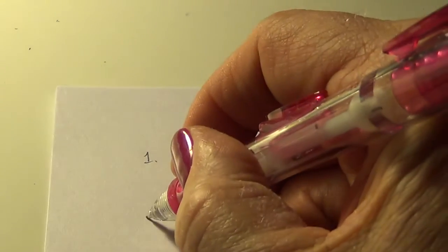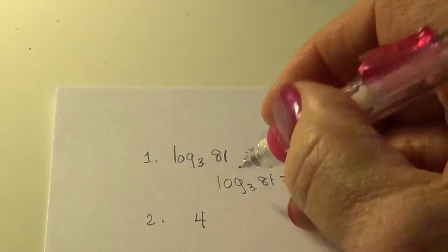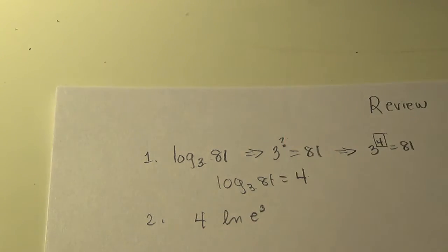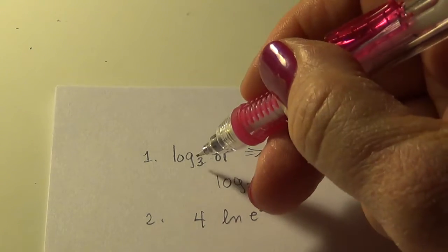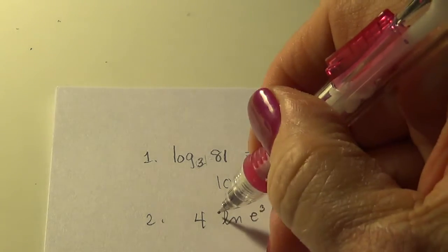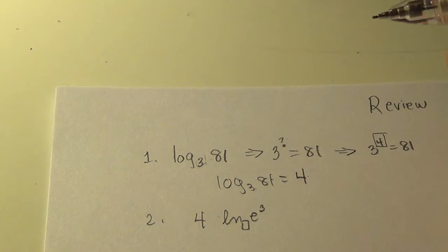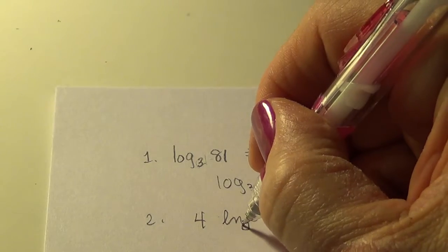So with understanding logarithms, let's see if you can simplify this expression. When there's no base number written like there was in this one, and it says LN, we know the base. Do you recall it? It is E, base E.